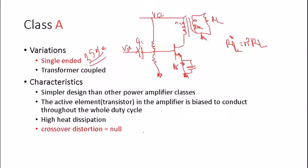Now I'll discuss the characteristics of a Class A power amplifier. First, it has a simpler design than other power amplifier classes due to its single-transistor design. The main characteristic is that the transistor is biased to conduct throughout the whole duty cycle.